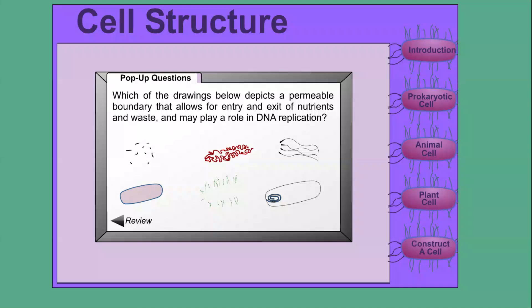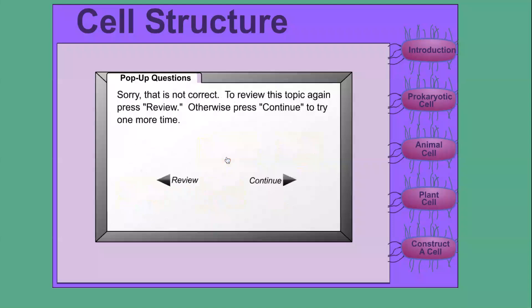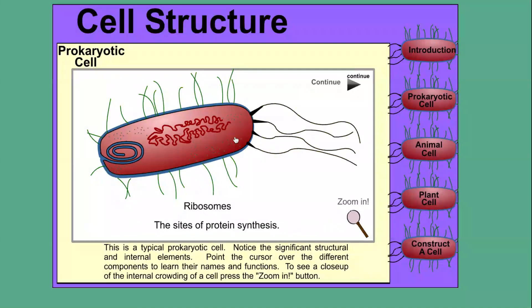It may play a role in DNA replication and you will choose one of them here. For example, like this. And they will say sorry, that is not correct. So if you're not correct, do it again until you get it right.